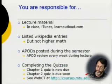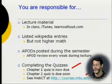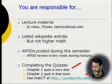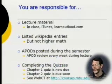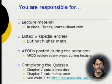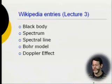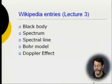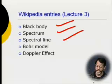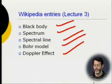You need to go to courses.mtu.edu to get credit, and it would be useful to actually take the quizzes and the midterm and final when they appear. Please don't cheat—I expect everyone to do this themselves; we have ways of knowing. The Wikipedia entries you'll explicitly be responsible for are: black body, spectrum, spectral line, Bohr model, and Doppler effect—all covered today.